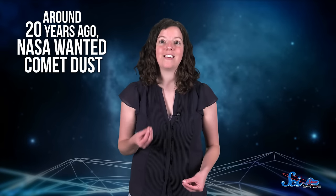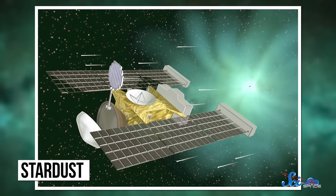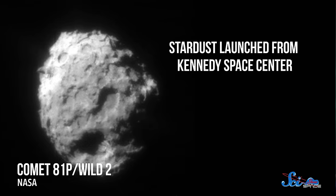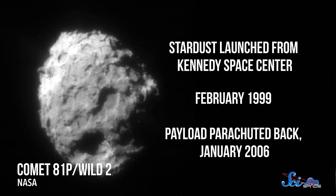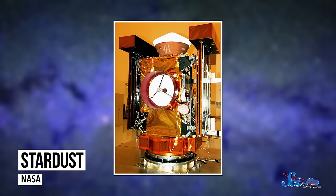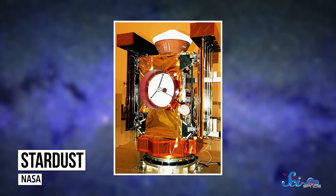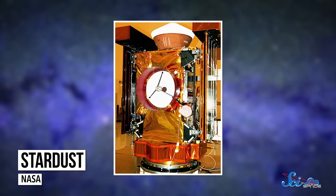Around 20 years ago, NASA scientists wanted to get their hands on some comet dust, so they launched the Stardust mission to study the comet Wild-2. The Stardust spacecraft launched from the Kennedy Space Center in February 1999, and its payload parachuted back to Earth in January 2006. The spacecraft was a brick of scientific instruments, about the size of a big desk, with a solar panel sticking out of each side.